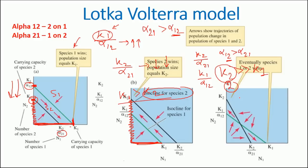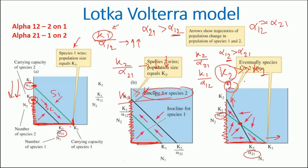There is a third situation where the isoclines intersect each other at a point due to alterations in alpha 12 or alpha 21. In this case, the values of K1 and K2 are not much different. When alpha 12 and alpha 21 are similar, we cannot predict with certainty whether species 1 or species 2 will win. So in graphs where the isoclines intersect, either species 1 or species 2 can win, because both have the capability to win. That is how we use the Lotka-Volterra model to predict predator-prey relationships.